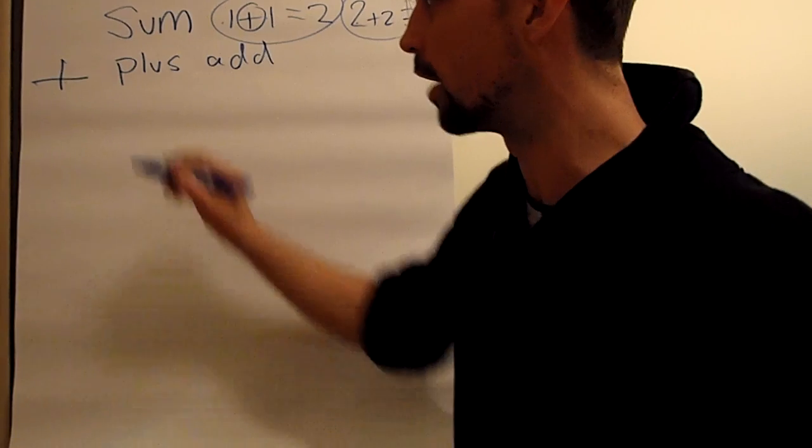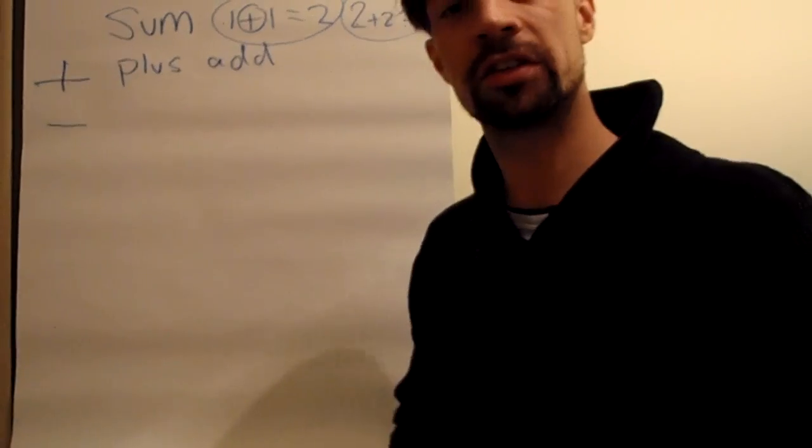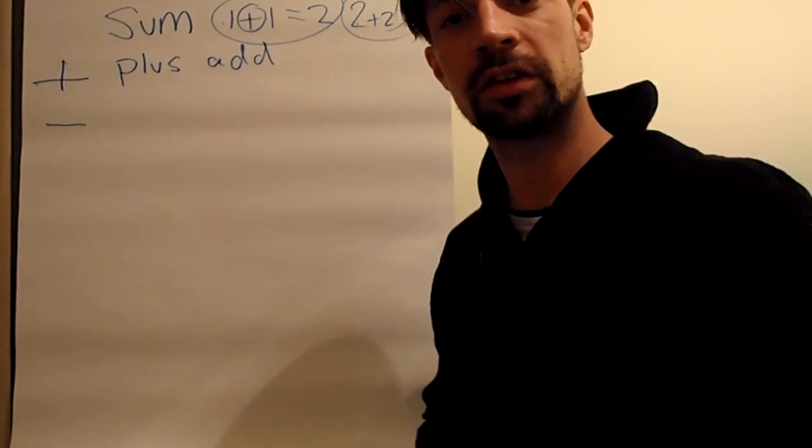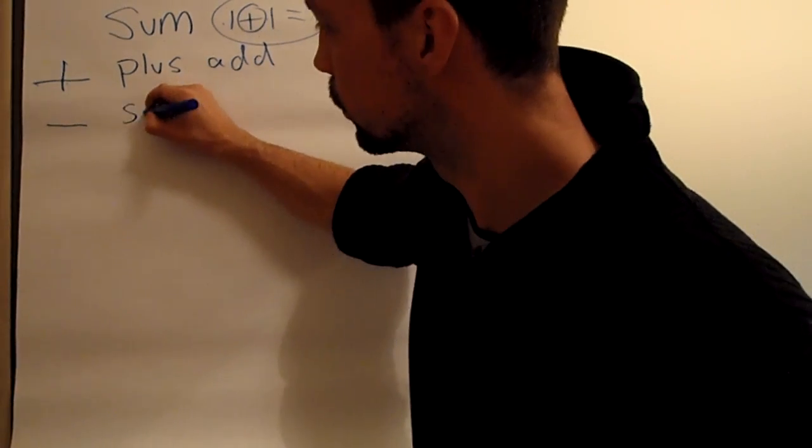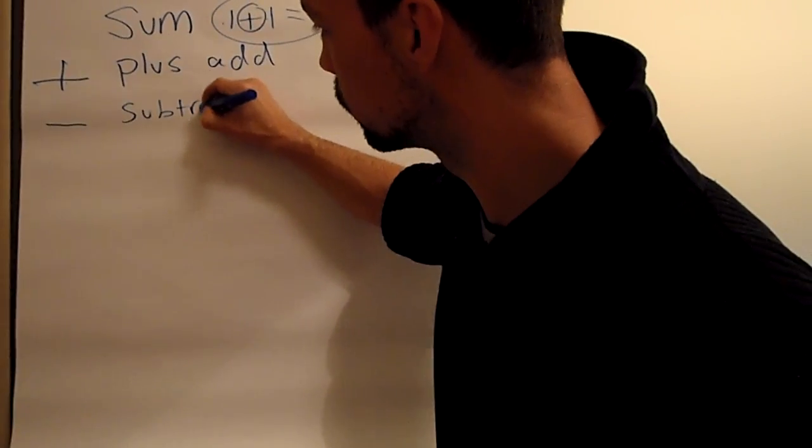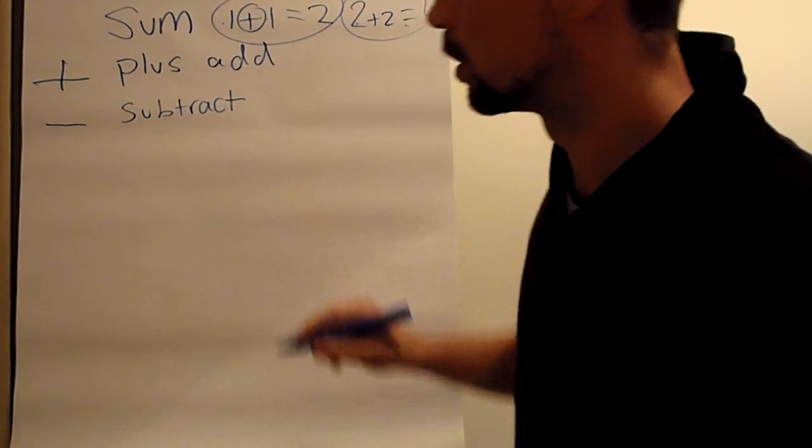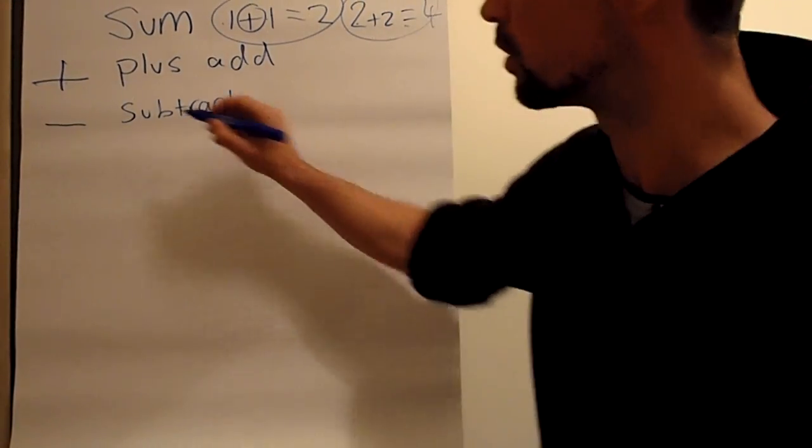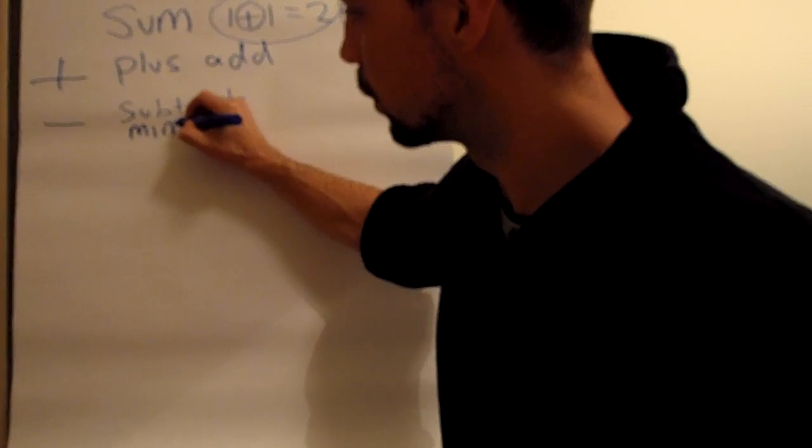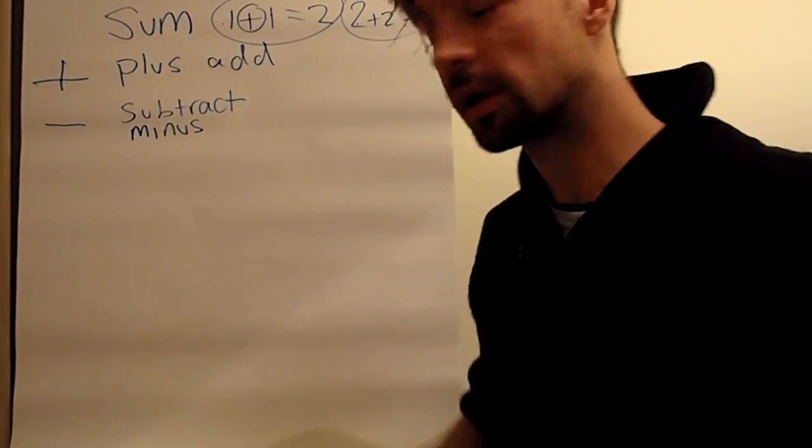The next one we have is this symbol, and this is called subtract. It also has a couple of other names as well. One of the names is minus and one is take away.